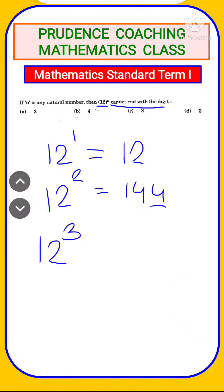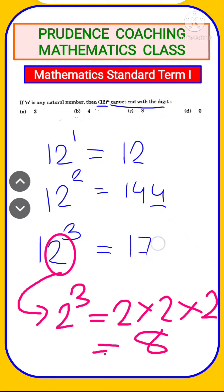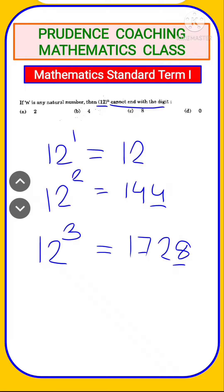12 to the power cube will get 1728. That means 8 also can come in the unit place. But we are left with option number d. So this will be our correct answer that it cannot have 0 in the unit place.